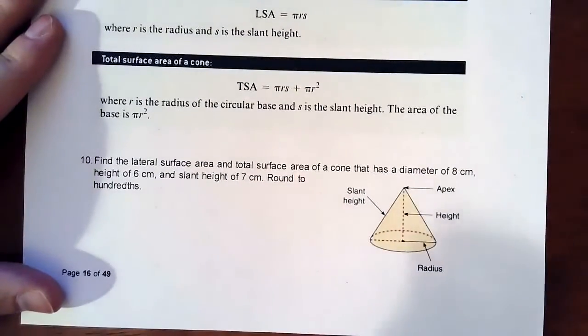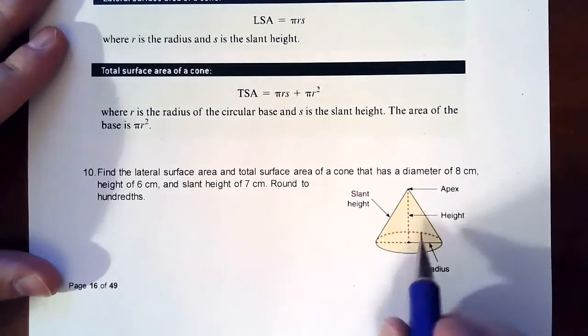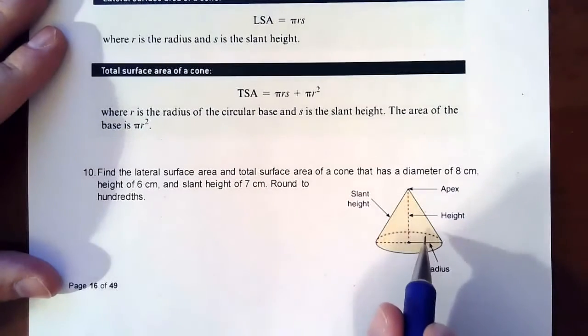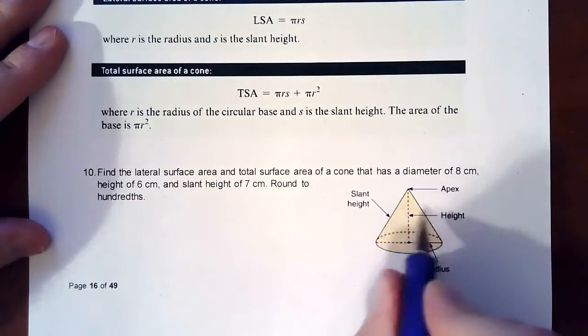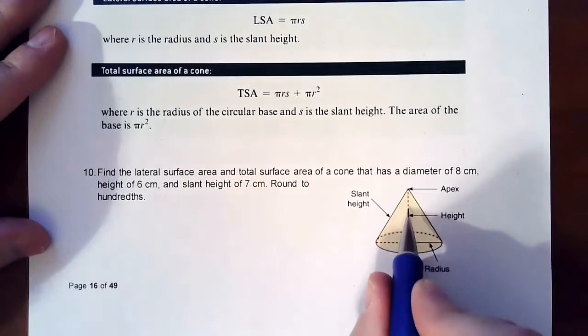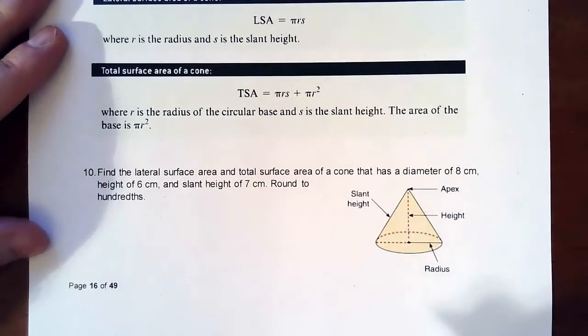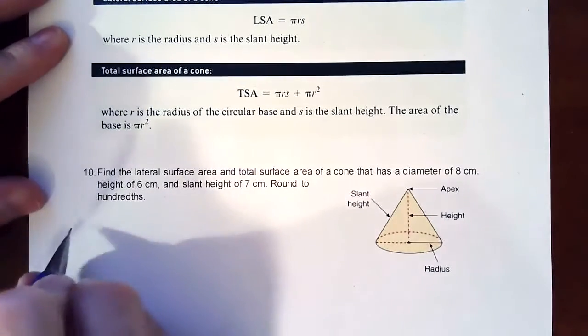A cone has two parts: the bottom and the part that makes up the cone. The part that makes up the cone is what we call the lateral area, and then you have the base. So the two combined will make the total surface area.